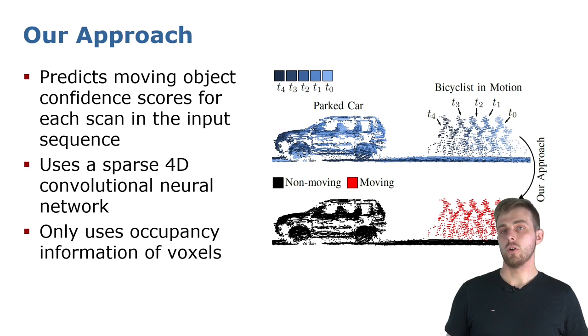Our approach predicts moving object confidence scores for each scan in the sequence using spatiotemporal 4D convolutions. In contrast to most other approaches, we do not require to project the data into smaller dimensional representations, like range images or birds-eye-view maps. Instead, we directly predict moving objects in the sparse 4D space.